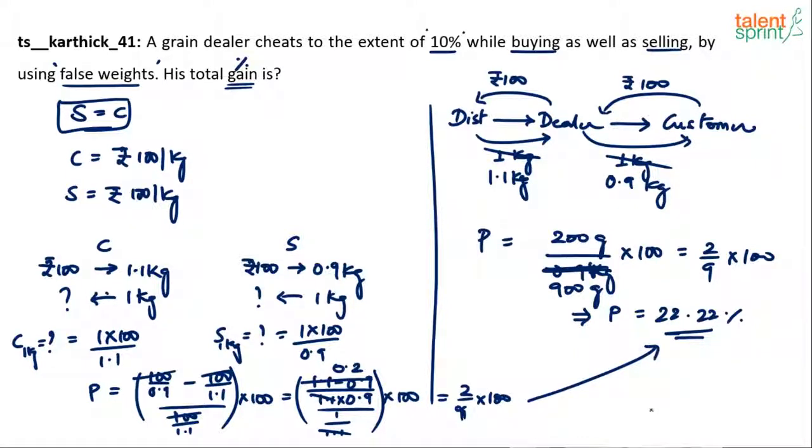So either you work in terms of rupees or in terms of weight, you get the same answer: 2/9 × 100 = 22.22%. His gain is 200 grams over a costing of 900 grams. He spent worth 900 grams but got 200 grams extra, so profit is 200/900 × 100 = 22.22%. That is the answer.